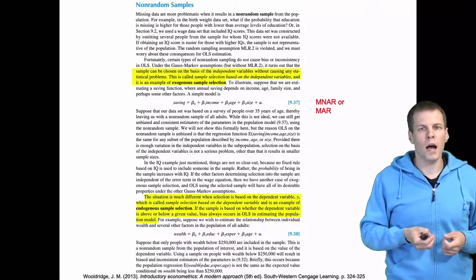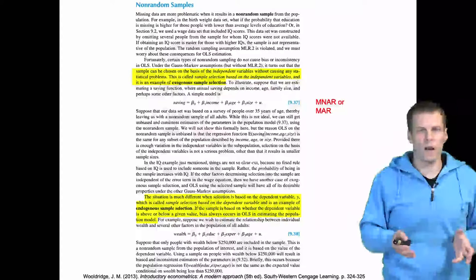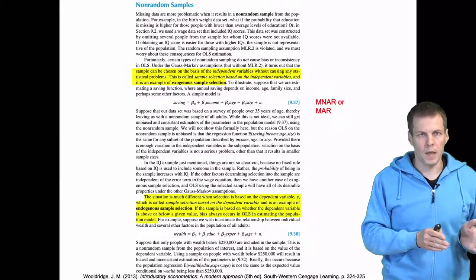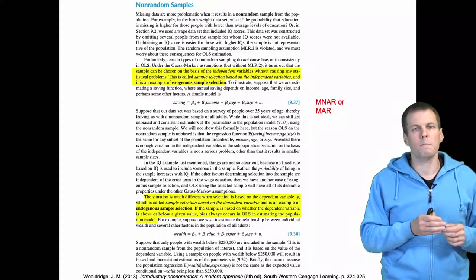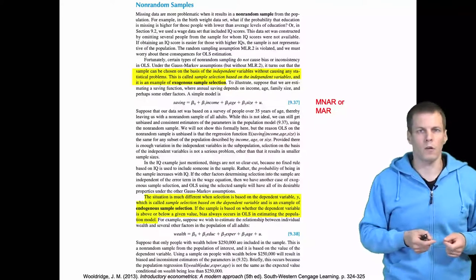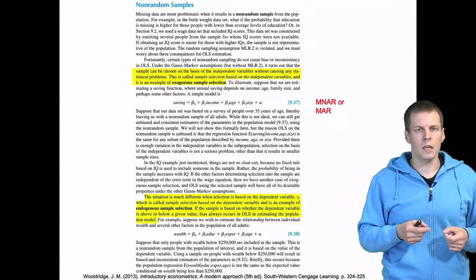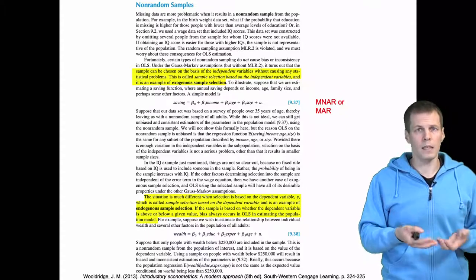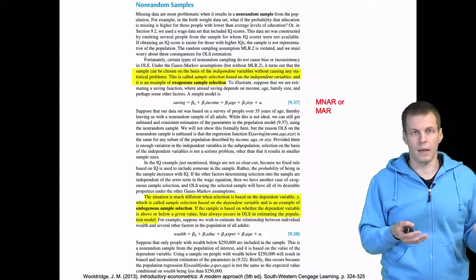Interestingly, if you have exogenous x variables — variables that you observe and assume to be fixed — then missingness on those variables does not have an effect. If your missingness depends on the dependent variable, then that is a lot more problematic. This is a general rule: missingness in a dependent variable is more problematic than missingness in an independent variable.